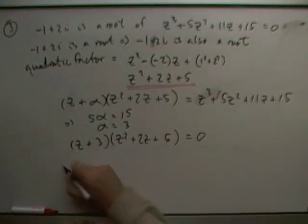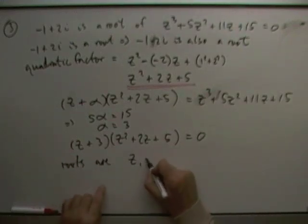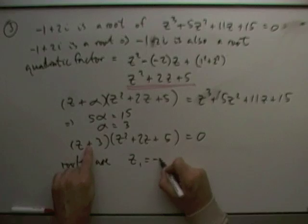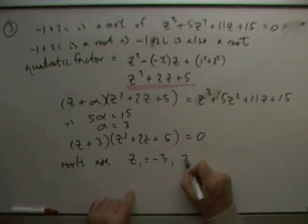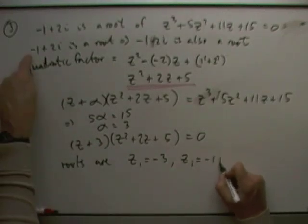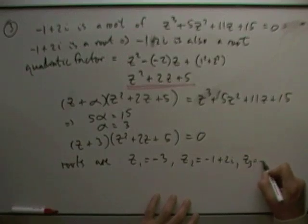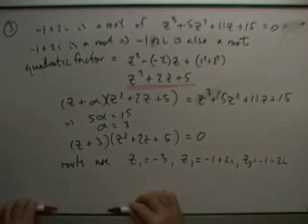Setting that equal to zero, my roots are: z1 = negative 3, z2 = negative 1 plus 2i, and z3 = negative 1 minus 2i.